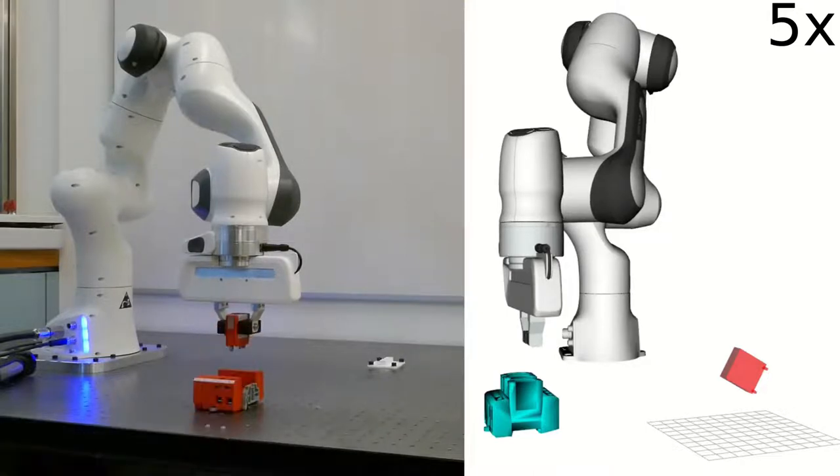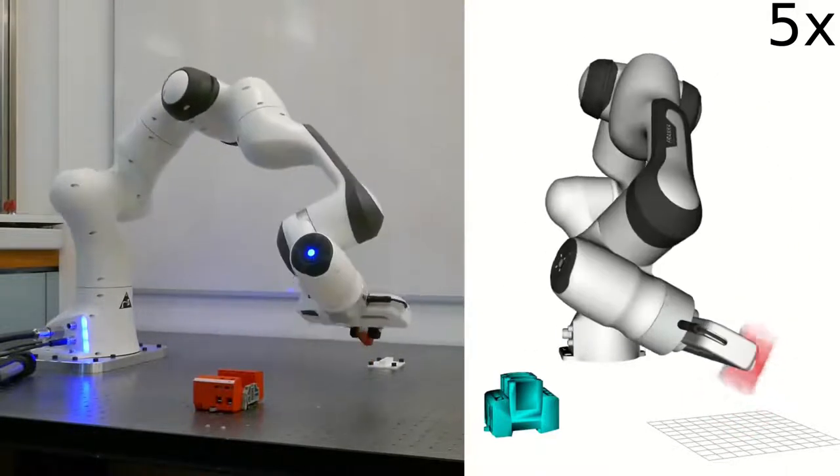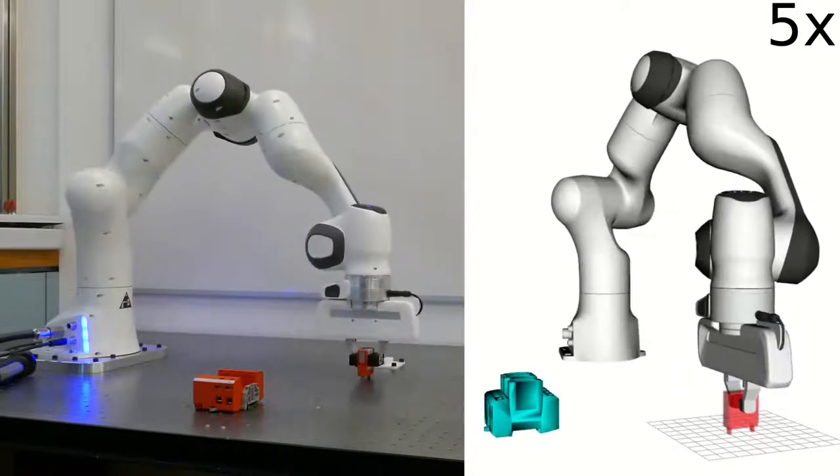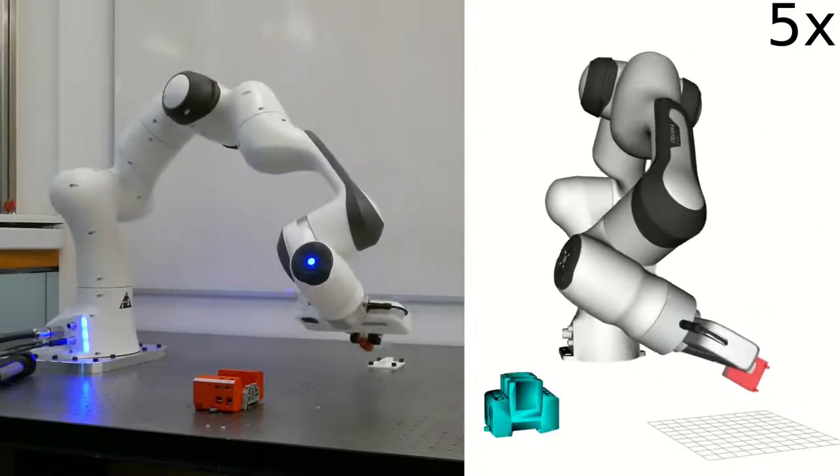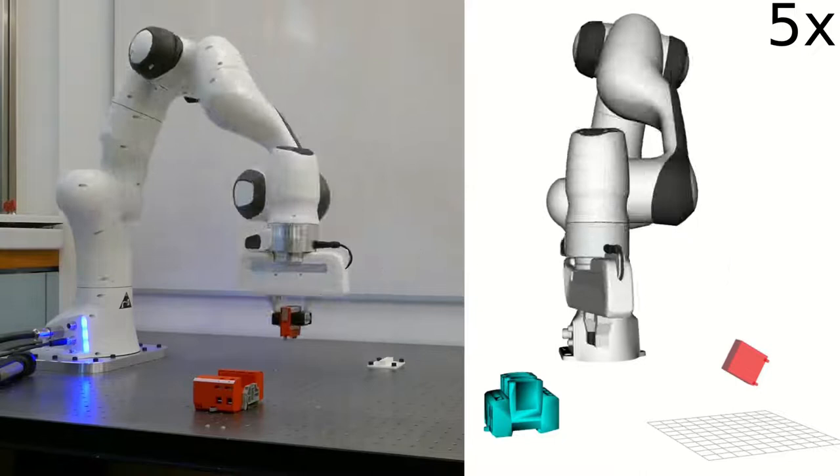In an integrated experiment, an operator passes a fuse object to the robot. The robot estimates the in-hand pose by pushing the fuse against a table.